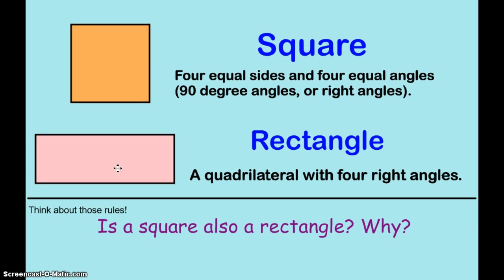But if I look at this rectangle and I try to define it as a square, I have to have 4 equal sides. And these sides, left and right, are not the same length as top and bottom. So that means a rectangle cannot be called a square, but a square could be called a rectangle.